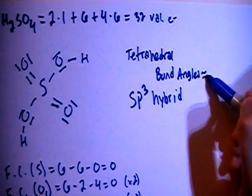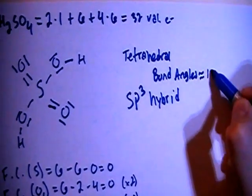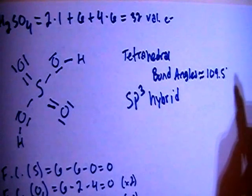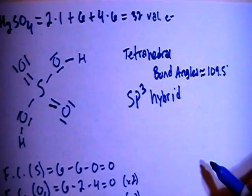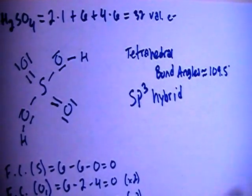Okay, and when you have tetrahedral shape, the bond angles are going to be approximately 109.5 degrees. And that's pretty much it. If you have any questions about this structure or anything else, let me know, and thanks for watching.